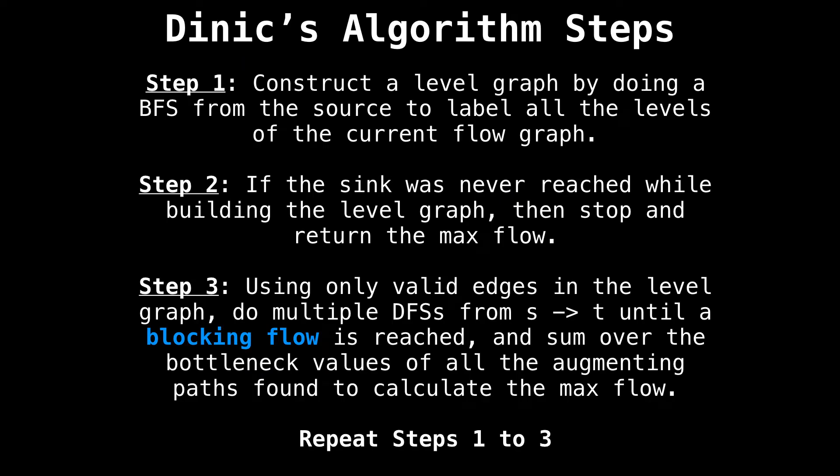The actual steps to executing Dinic's are as follows. First construct a level graph by doing a breadth first search from the source to label all the levels of the current flow graph. Then if the sink was never reached while building the level graph, you can stop and return the value of the maximum flow. Then using only valid edges in the level graph do multiple depth first searches from the source to the sink until a blocking flow is reached and sum over the bottleneck values of all augmenting paths to calculate the maximum flow as you do this. Repeat steps one through three.